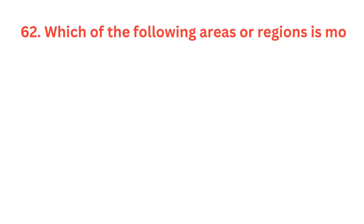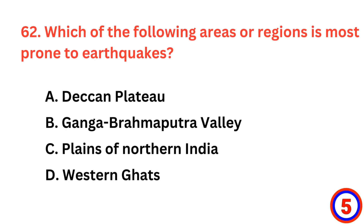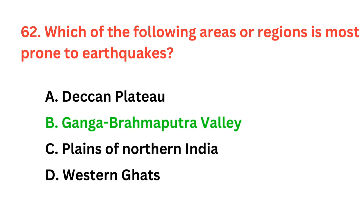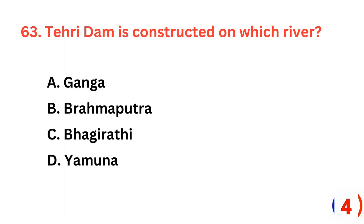Which of the following areas or regions is most prone to earthquakes? The correct answer is option B, Ganga-Brahmaputra Valley. Tehri Dam is constructed on which river? The correct answer is option C, Bhagirathi.